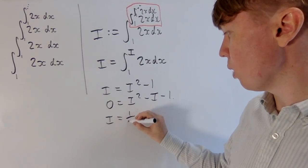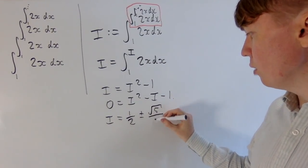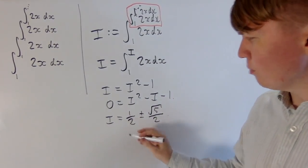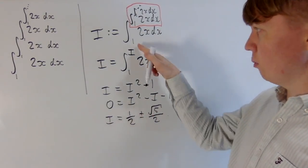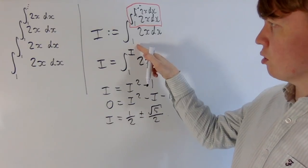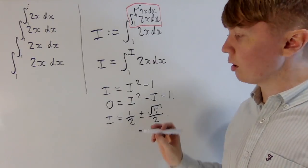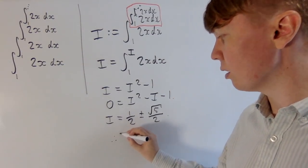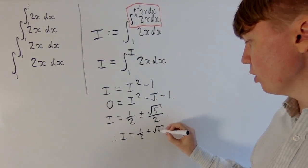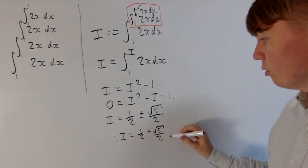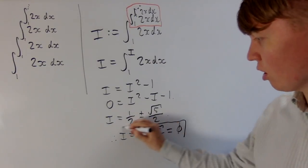We solve this using the quadratic formula and get i equals one-half plus or minus root 5 over 2. You may notice that one-half minus root 5 over 2 is less than 1, so if we're integrating between 1 and something, that something should be greater than 1. It's not unreasonable then to conclude that i equals one-half plus root 5 over 2 — and this is especially nice because this is actually equal to φ, the golden ratio.